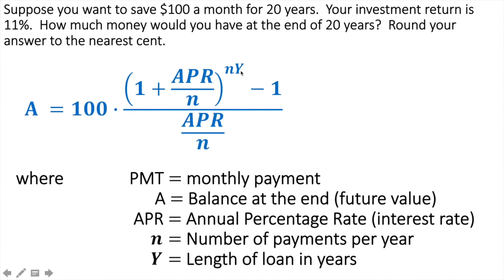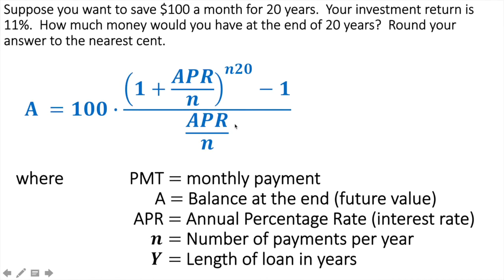$100 a month for 20 years, so Y — we know our Y. We're going to substitute 20 for Y. Next up, we have the interest rate, the annual percentage rate. It's 11%, and when we write this in, we're going to convert it to a decimal. So 11% would be 0.11 as a decimal. Notice that's located in two different spots, so we're going to write it in both places. 0.11 is my 11%.